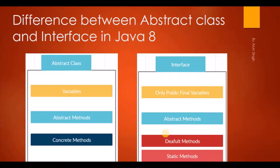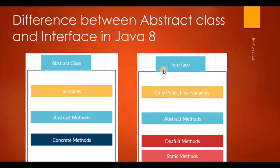Let's see the difference between abstract class and interface in Java 8. Abstract class has variables, while interface has only public final variables. Abstract class has both abstract methods and concrete methods. Interface has only abstract methods, default methods, and static methods.